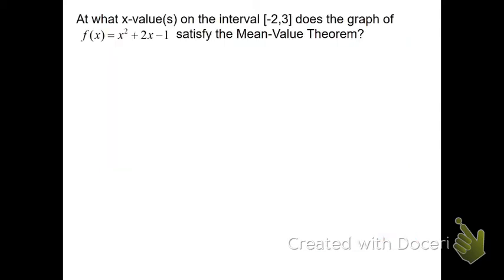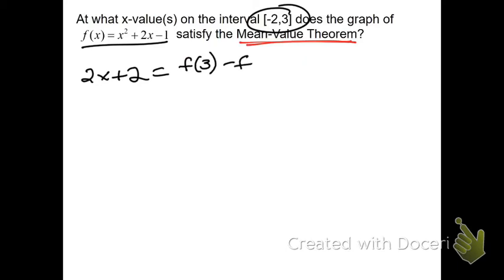Here's an example algebraically. Again, as soon as you see mean value theorem, think to yourself, actual derivative equals estimated derivative. Actual derivative is the derivative. The derivative of this, which is 2x plus 2. It has to equal the estimated derivative, algebra 1 slope using these endpoints. And, I suggest you actually write it out every time. f(3) minus f(-2) all over 3 minus (-2). The reason I say write it out like this is a lot of people forget the denominator.